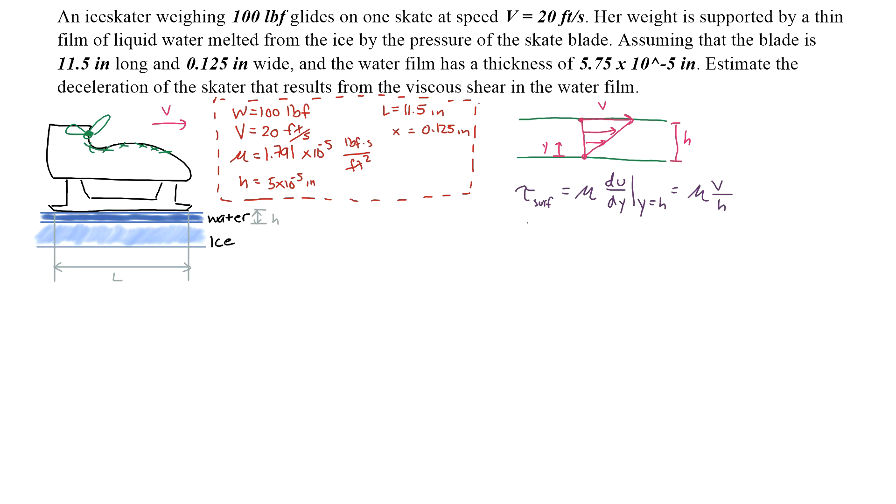Now that we have the shear stress acting on the skate, we apply dimensional analysis to find the shear force. F_shear is simply the shear stress at the surface of the thin film times the area of the bottom of the skate blade, A.